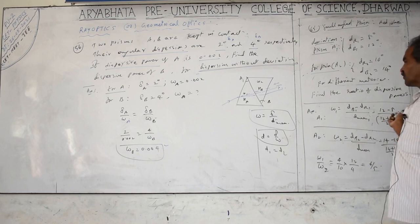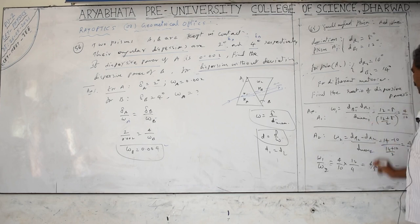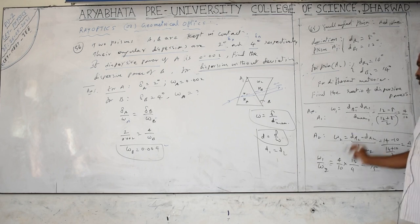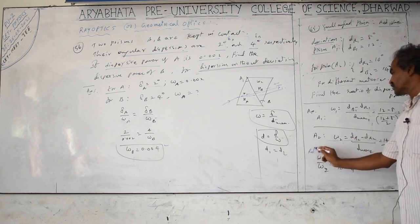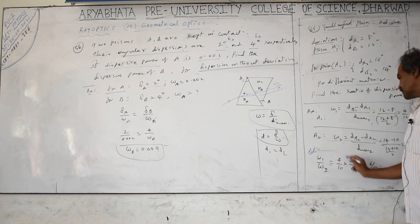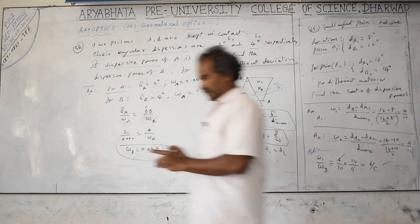For the second prism, omega_2 equals (d_b2 minus d_r2) divided by mean deviation. That is (14 minus 10) divided by (14 + 10)/2 = 4 divided by 12 = 1 by 3. The ratio of dispersive powers omega_1 by omega_2 equals (4/10) divided by (4/12) = 12 by 10 = 6 by 5. That is the answer.